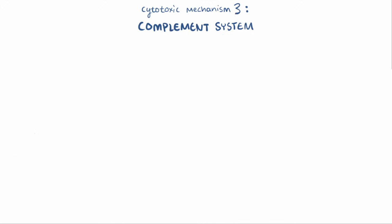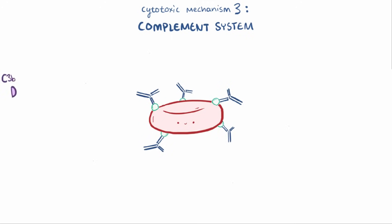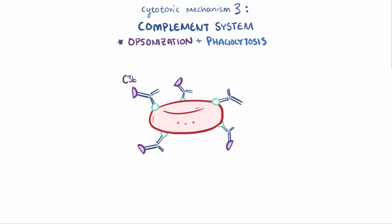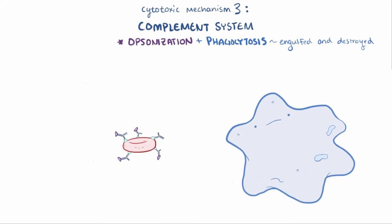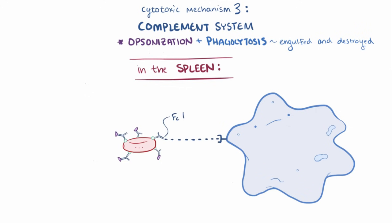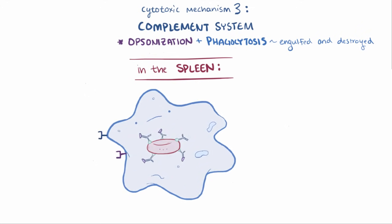The third cytotoxic mechanism happens when IgG antibodies coat a blood cell that is also bound by C3b, another complement protein fragment. At this point we say the cell has been opsonized, meaning it's targeted for phagocytosis — where it gets engulfed and destroyed by phagocytes like macrophages and neutrophils. The antibody-antigen complex and the cell it's attached to encounter a phagocyte in the spleen, which targets the cell by binding to the Fc tail of the antibody or the C3b bound to the IgG, then engulfs and destroys the cell.